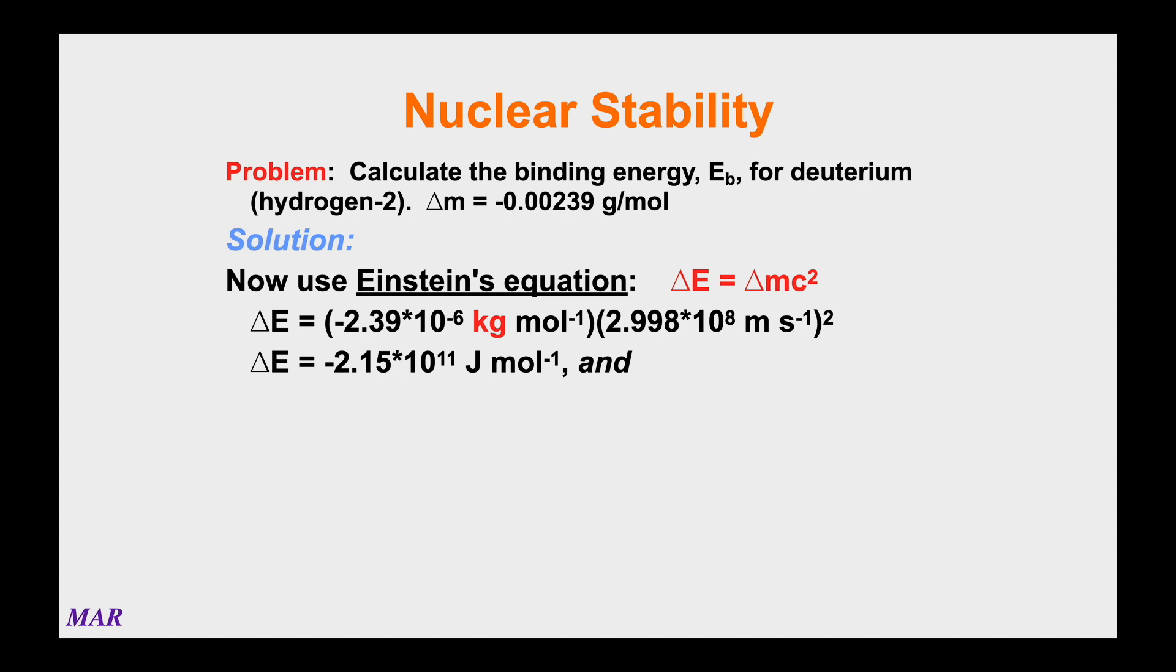Our delta m in grams per mole we have to turn into kilograms per mole. So that 0.00239 when you divide by a thousand becomes -2.39 × 10⁻⁶ kilograms per mole. You can then multiply by the speed of light squared. The speed of light is 2.998 × 10⁸ meters per second. If you square the speed of light and multiply it by the kilograms per mole, you're going to get an energy in joules per mole.